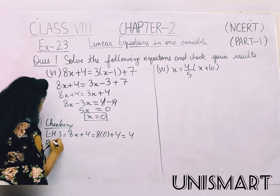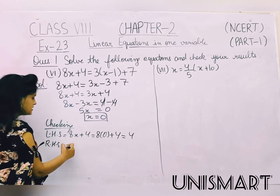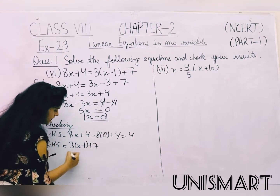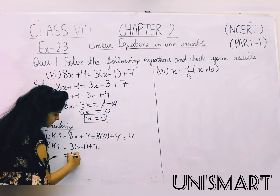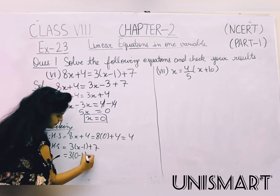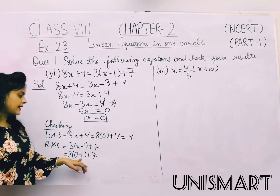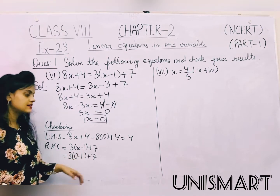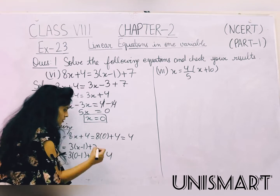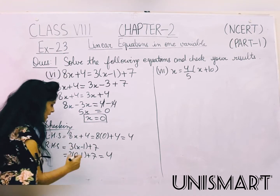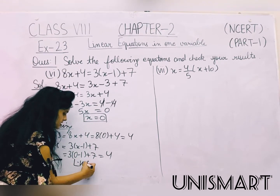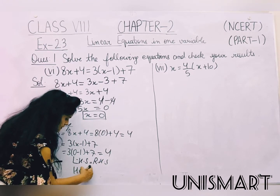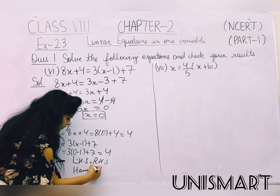We solve the RHS part. RHS is 3 into (x minus 1) plus 7, with x equal to 0. So minus 1 into 3 is minus 3, and minus 3 plus 7 is 4. LHS with x equals 0: 8 into 0 plus 4 is 4. LHS and RHS are equal, so LHS is equal to RHS.